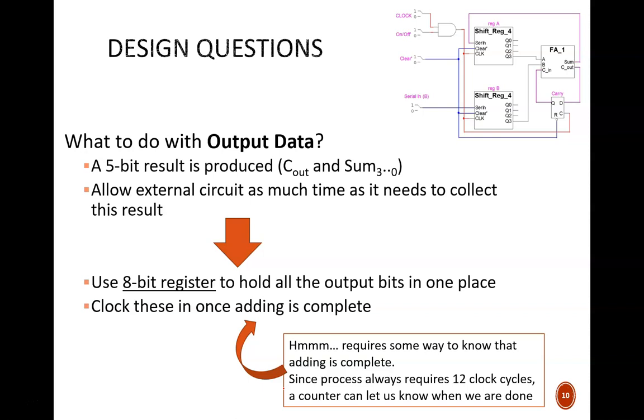The bad news is that this adder does not include a status signal to tell us this. The good news is that each run of the serial adder requires exactly 12 clock cycles. Remember the table that we filled out. Therefore, we could use a counter to keep track of the number of clock cycles.